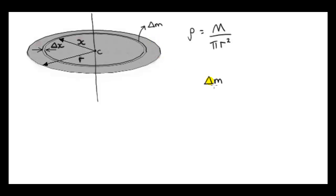What do we do to get the approximate moment of inertia of this mass element about this axis? We multiply its mass by the distance squared to the axis. So the distance squared would be the radius of that ring. We haven't taken limits yet, so the radius of the ring is a bit ambiguous — we could take x going from the center to the inner part of the ring or x going to the outer part of the ring. But when we let delta m approach zero, as we've seen before, there's no ambiguity. This mass element becomes infinitely thin.